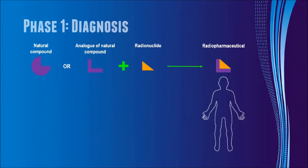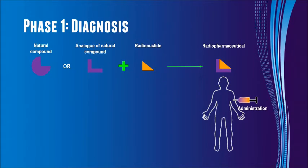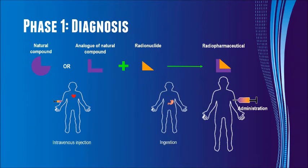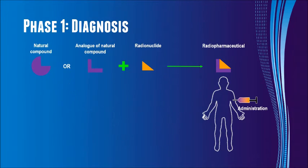The first phase of a theranostics procedure is diagnostic imaging. In nuclear medicine, this is achieved by first administering a radiopharmaceutical to the patient. This can be given as an intravenous injection, eaten with food, swallowed as a tablet, or inhaled as a gas. The radiopharmaceutical used and the method of administration is dependent on the study being performed.